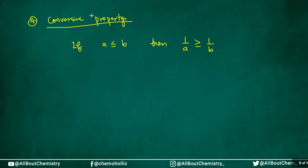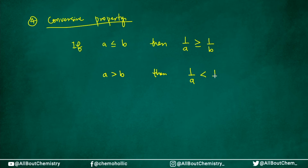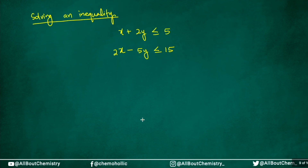The next property is the converse property. If a ≤ b, then taking the reciprocal reverses the inequality: 1/a ≥ 1/b. Similarly, if a > b then 1/a < 1/b. And if a ≥ b, then 1/a ≤ 1/b. So any inequality you have — when you take reciprocals, the inequality sign reverses.